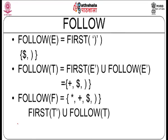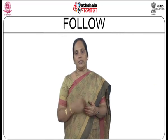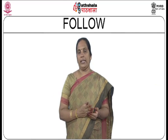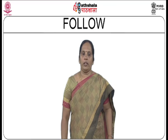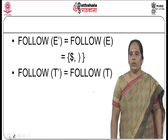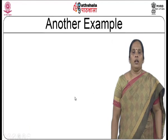To summarize the follow computation rules: rule 1 is adding dollar to the start symbol's follow. Rule 2 is for A produces alpha-B-beta: follow of B contains first of beta except epsilon. Rule 3 is if first of beta contains epsilon, follow of B contains follow of A. Rule 4 is for a direct production A produces alpha-B: follow of B contains follow of A. The alpha prefix can be epsilon. These rules were all applied to derive the follow sets in this example.